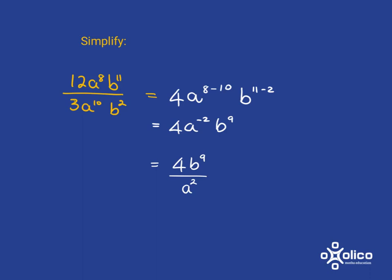And just notice you could have seen that right from here. You've got a to the 8 at the top and a to the 10 at the bottom. So you've got 8 a's multiplied together at the top and 10 of them multiplied together at the bottom. So 8 of these ones at the bottom will cancel with the 8 at the top. And you're left with 2 a's multiplied together at the bottom, which is where that a squared comes from.